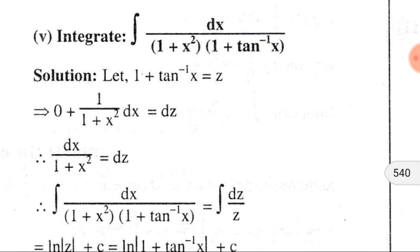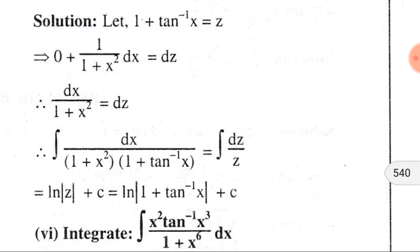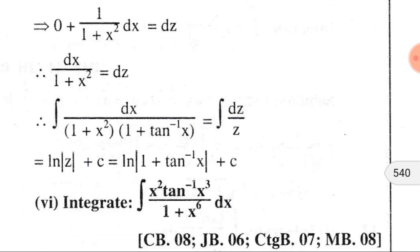Here is also an important problem: ∫dx/[(1+x²)(1 + tan⁻¹x)]. If we consider 1 + tan⁻¹x = z and take the differential of both sides, we get 1/(1+x²) dx = dz. Replacing it in the given integral, we find ∫dz/z, which can be written as ln|z| + C, where C is the integral constant. Replacing z by 1 + tan⁻¹x, we get ln|1 + tan⁻¹x| + C.